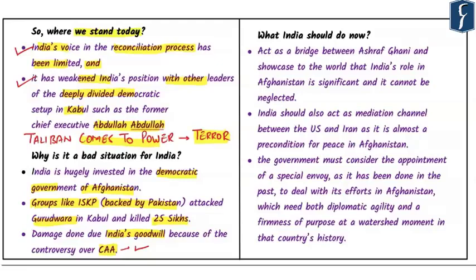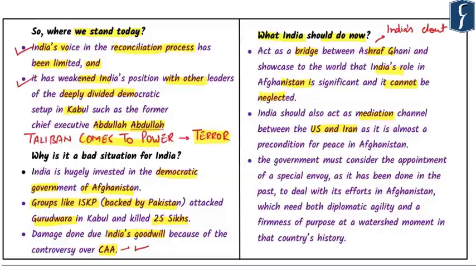To salvage the situation, the first thing India needs to do is showcase to the world that its usability in the peace process is very high. One simple way is to act as a bridge between the Ashraf Ghani government and the parallel government of Abdullah Abdullah, showing that India's role in Afghanistan is significant and cannot be neglected. Second, India should act as a mediation channel between the US and Iran, as India's relationship with Iran is very good — whether through purchase of oil and gas or the Chabahar port.